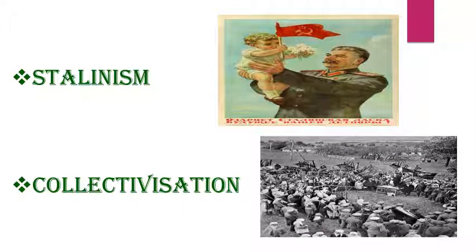Stalinism. Joseph Stalin — the first picture in the given slide is of Joseph Stalin. After the death of Vladimir Lenin in January 1924, Joseph Stalin became the leader of the Soviet Communist Party. By 1927–28, towns in Russia were facing an acute problem of grain supplies. The government fixed prices of grain, but peasants refused to sell their grain to government buyers at these low prices.